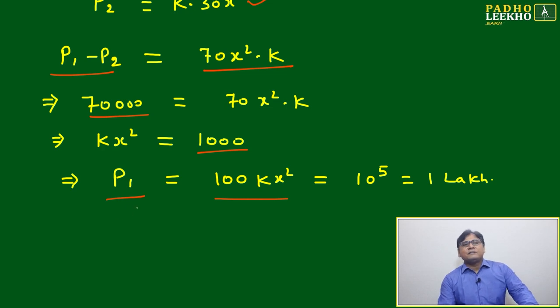Very easily we will be able to find kx² equal to 1000. P₁ original price we have to find. kx² is 1000 and price is 100kx².